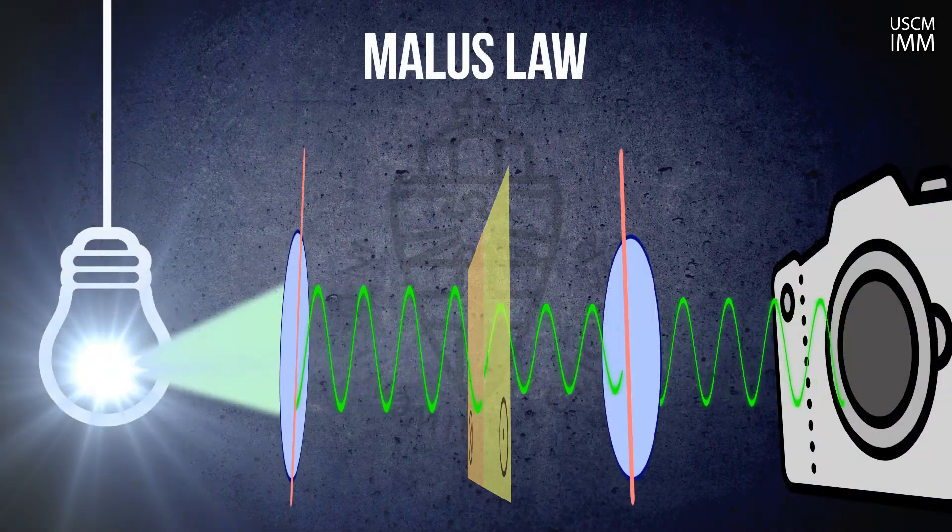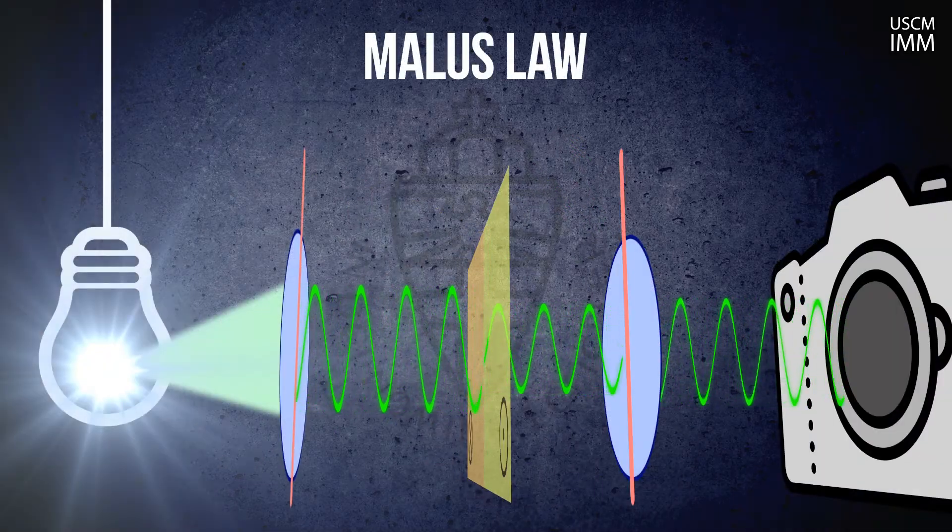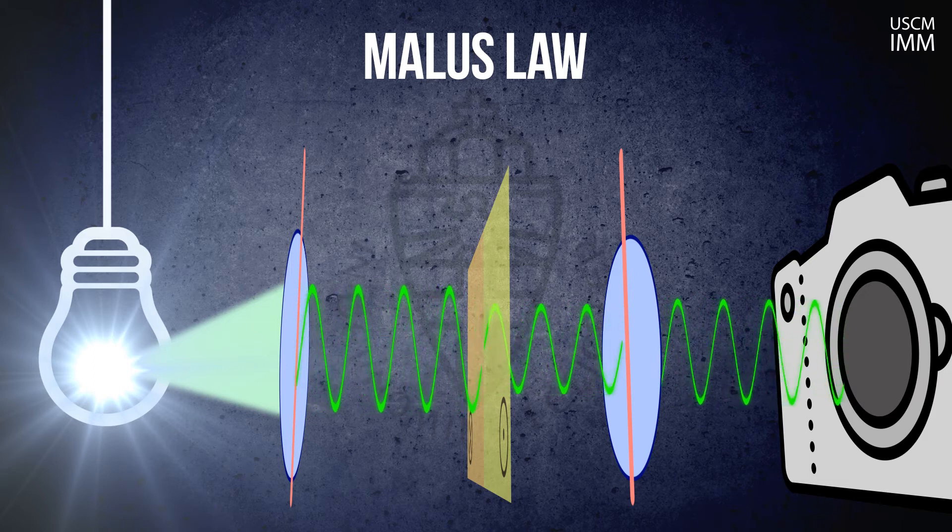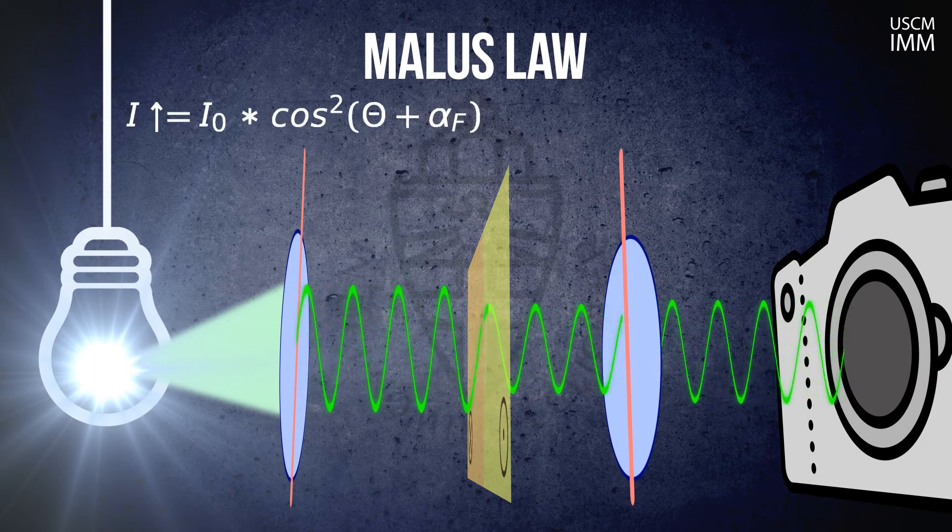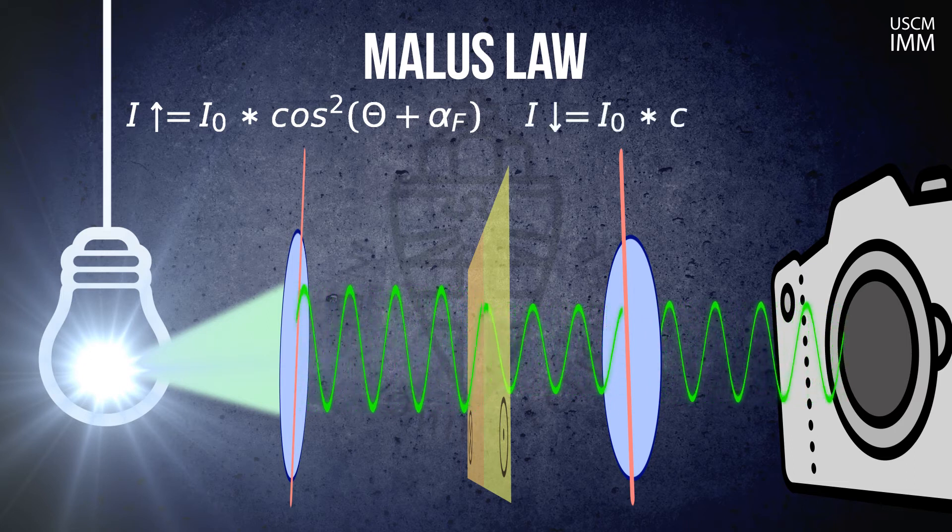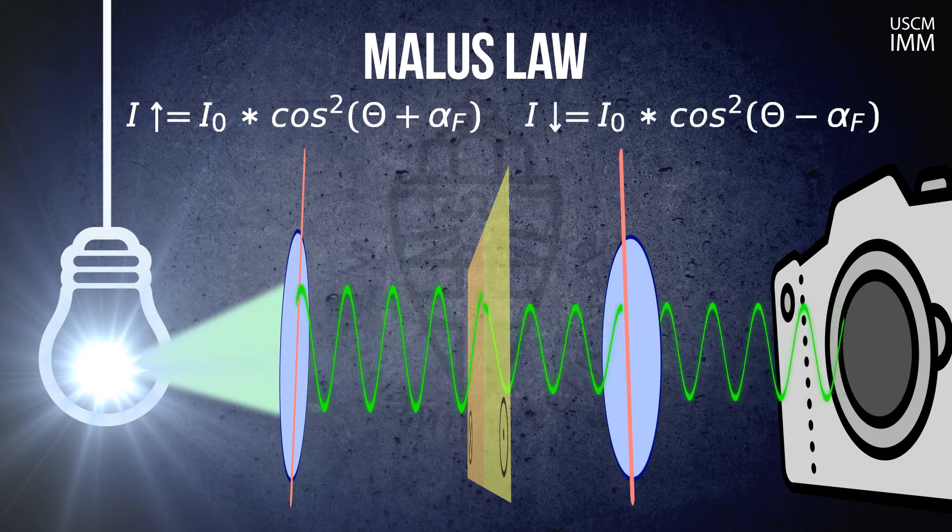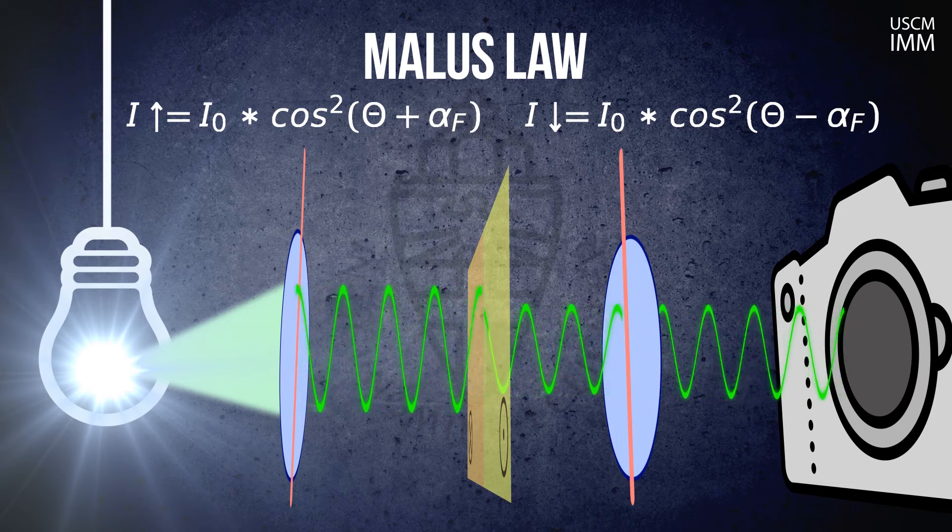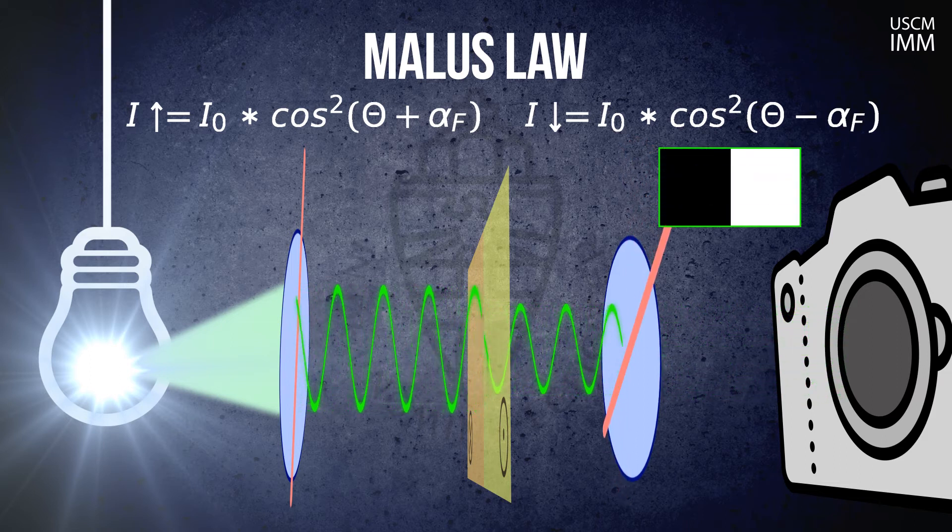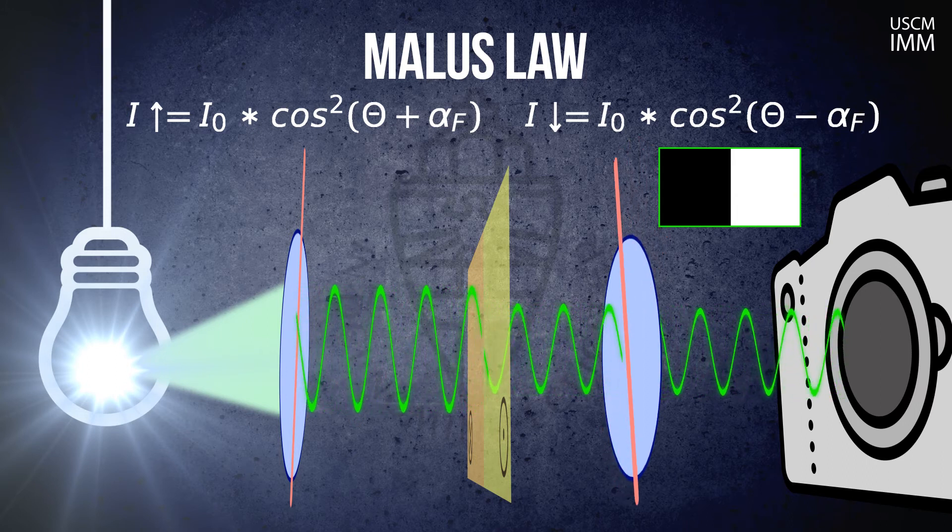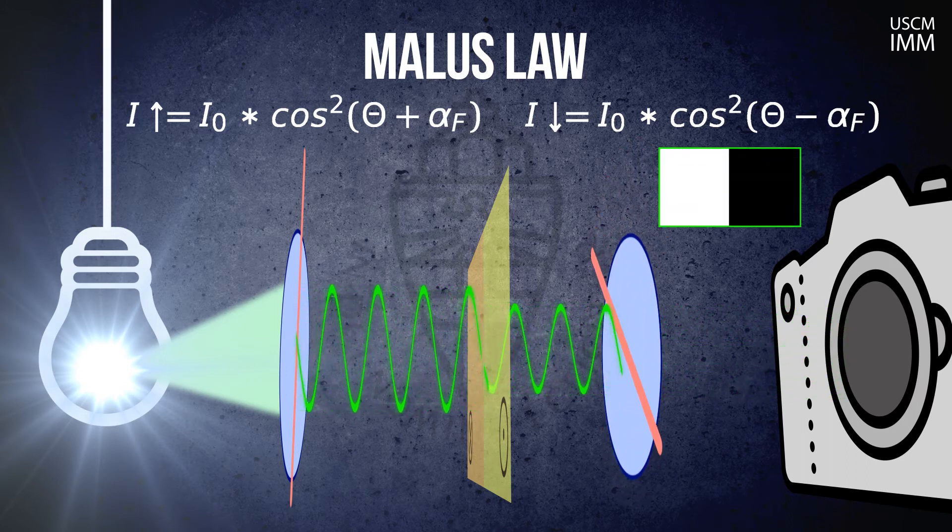The Malus's law for the intensity of light after the second polarizer will now obtain a slightly different form. If the light passes through the up domain, the intensity will be different from the case when the light passes through the down domain. We can always rotate one of the polarizers such that the intensity after the second polarizer becomes zero. The camera will thus visualize up and down domains as dark and bright areas respectively.